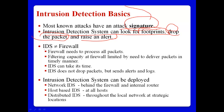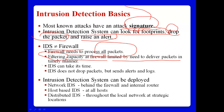IDS and firewall are a little bit different. A firewall normally needs to process all packets and uses packet filtering. Filtering capacity in a firewall is limited by the need to deliver packets in a timely manner. But IDS can take more time, and IDS does not drop the packet but sends alerts on anomalies.